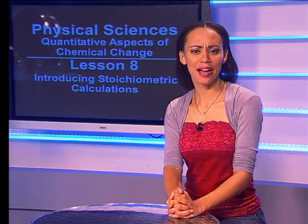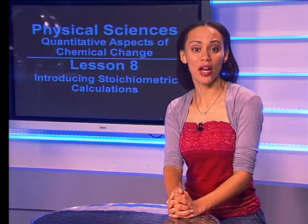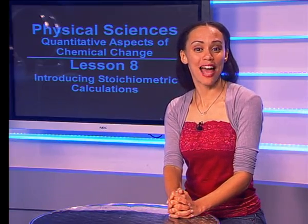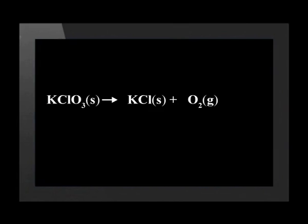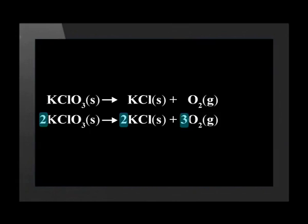Thinking back to our steps, we start by writing a balanced equation for the reaction when potassium chlorate is heated. Potassium chlorate with the formula KClO3 forms potassium chloride with the formula KCl and oxygen with the formula O2. This equation is not balanced. To balance it, we need 2 moles of potassium chlorate that will form 2 moles of potassium chloride and 3 moles of oxygen.